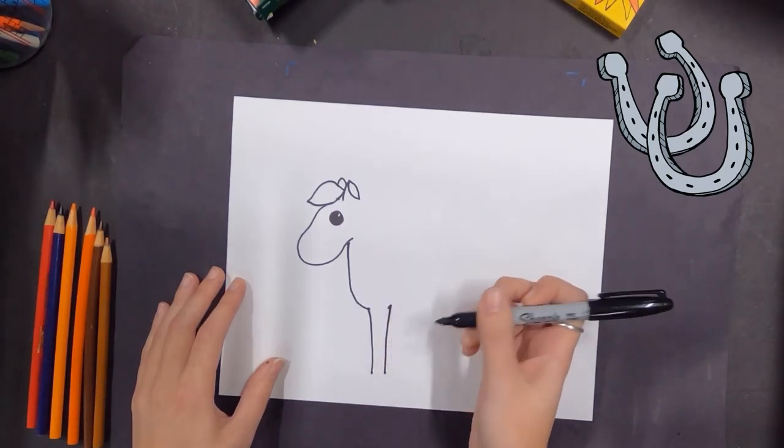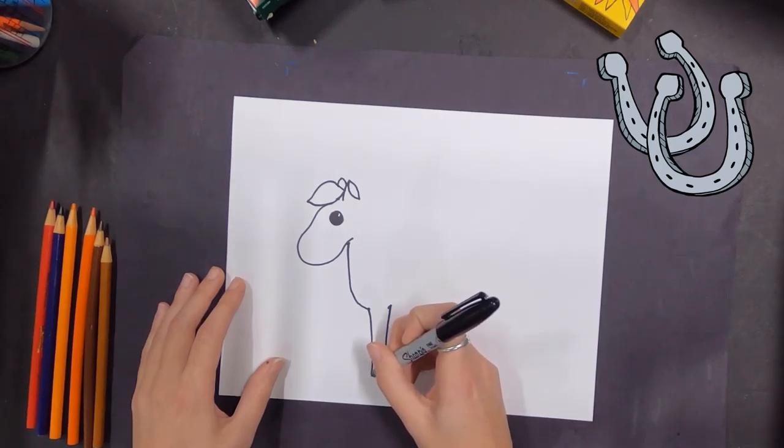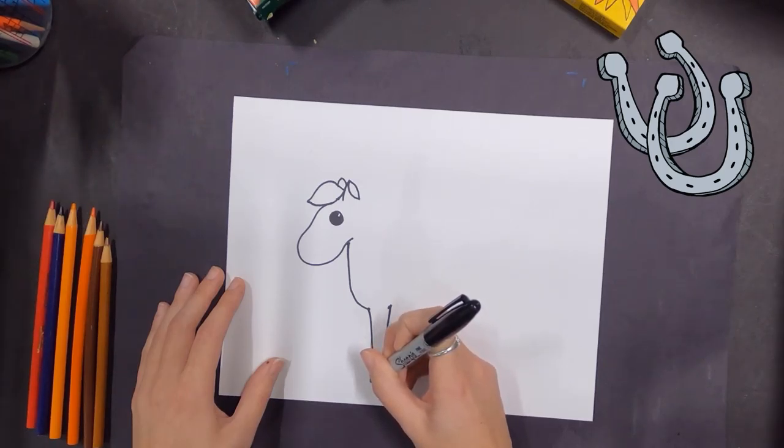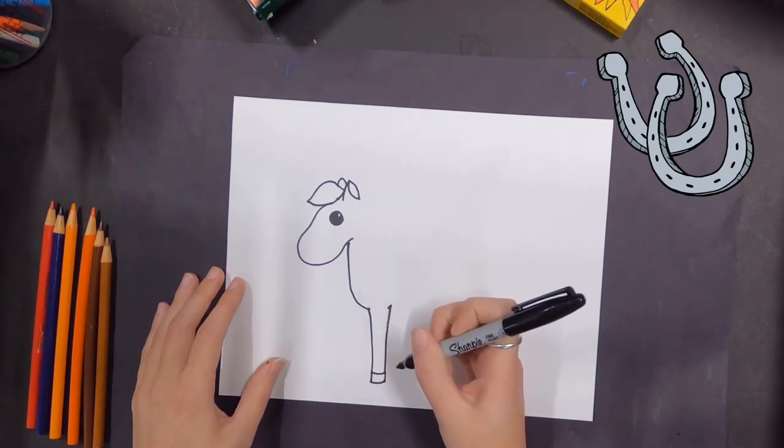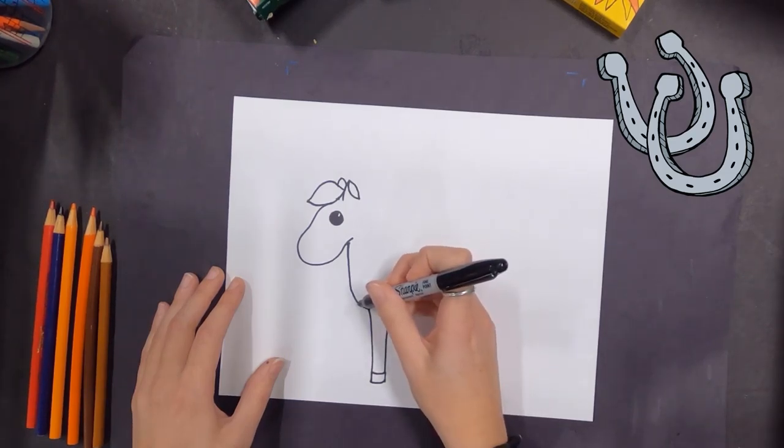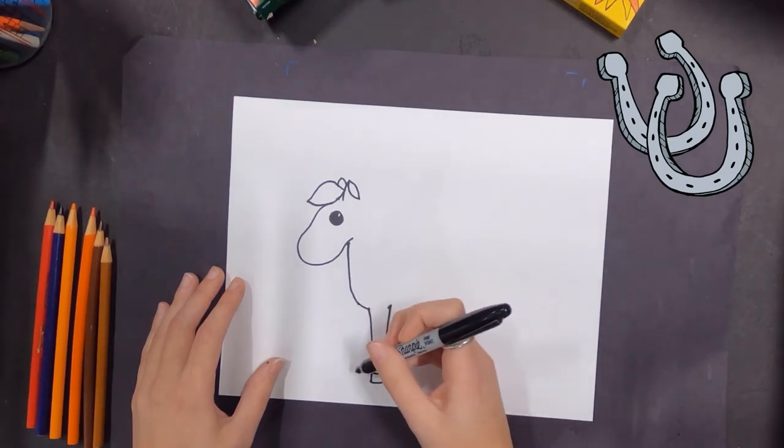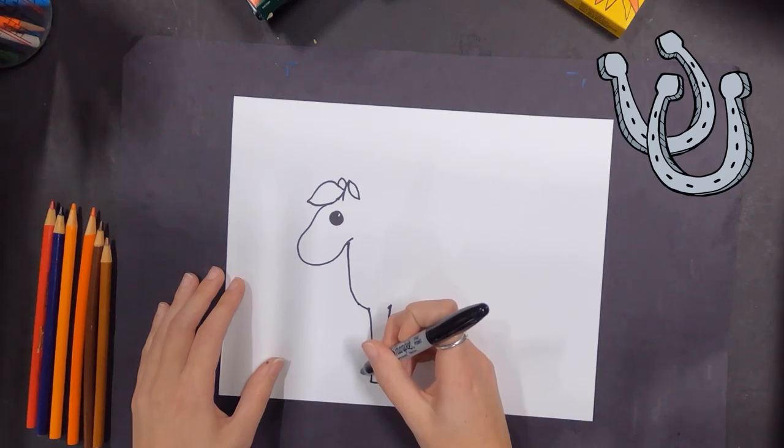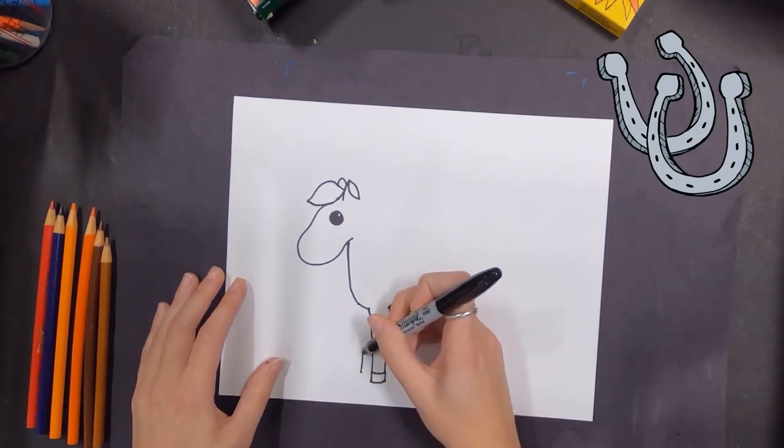Now we've got to figure out how to make those legs right. So let's put a line at the bottom, little dot, and then we're going to pull that line straight up. Perfect. We're going to do it right here again. And we're going to drag that line up. Perfect. Can you guess what we're making? Right, the horse's leg.